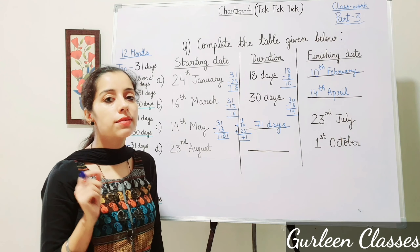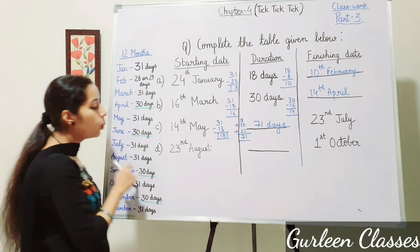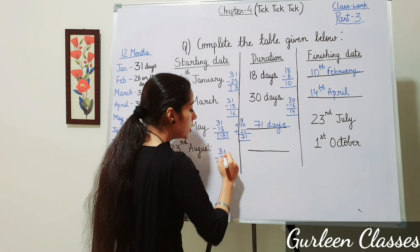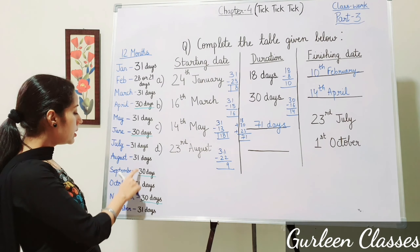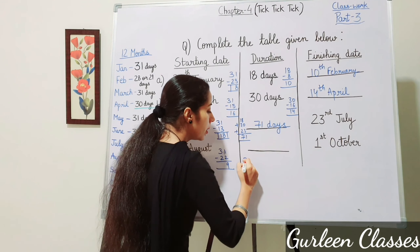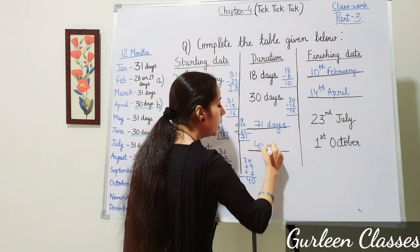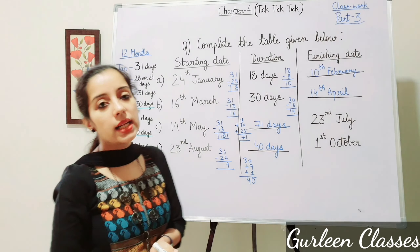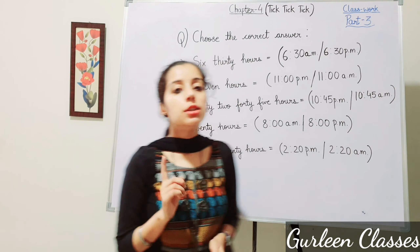Part D: starting date 23rd August, finishing date 1st October — September is missing. August has 31 days: 31 minus 22 equals 9 remaining days. September has 30 days. Add 1 day of October: 9 plus 30 plus 1 equals 40 days. Write these answers in your maths workbook.